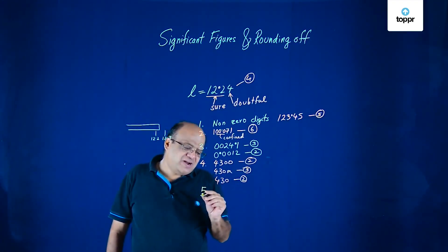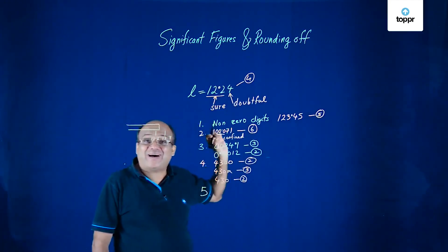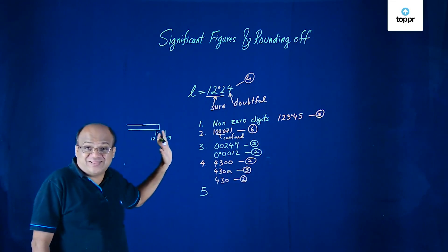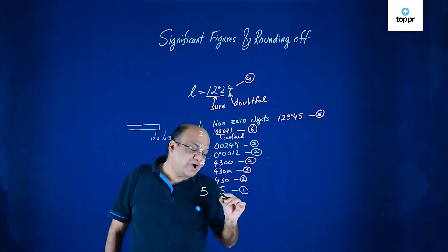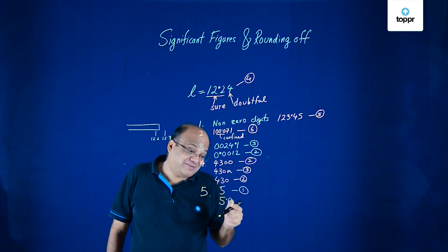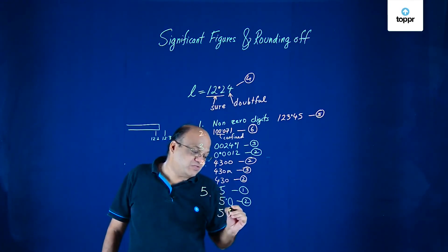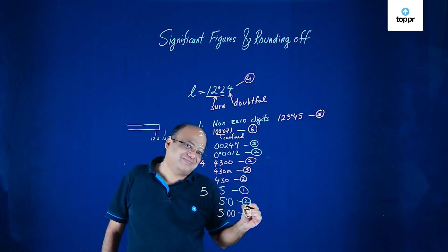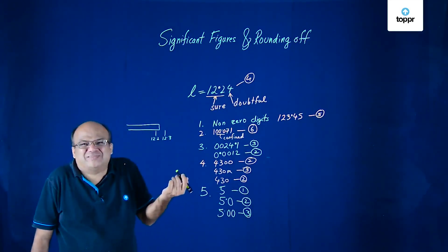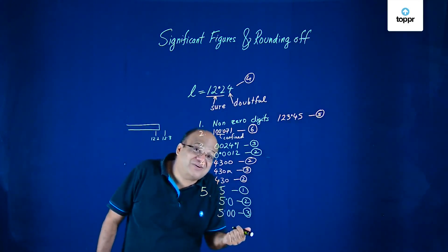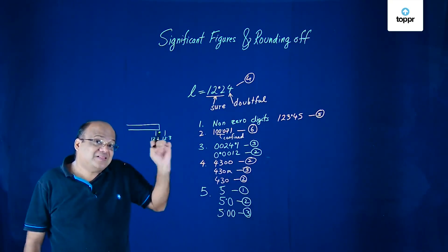If the number has a decimal point, then the zeros to the right of the rightmost non-zero digit are significant. Number 5 has got one significant digit. 5.0 is more accurate because we are sure that zero is there, so this has got two significant digits. And 5.00 has got three significant digits. Sometimes a teacher says 5.0 or 5.00 and you wonder why — but these are telling you the number of significant digits in the measurement.